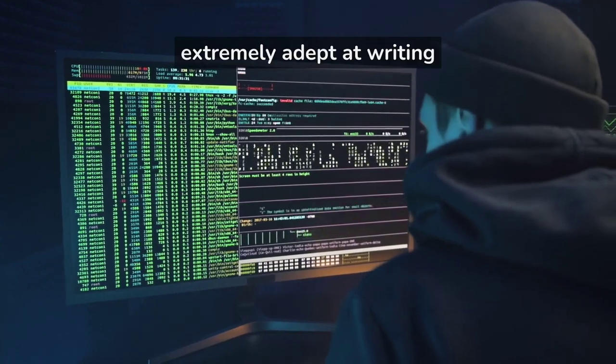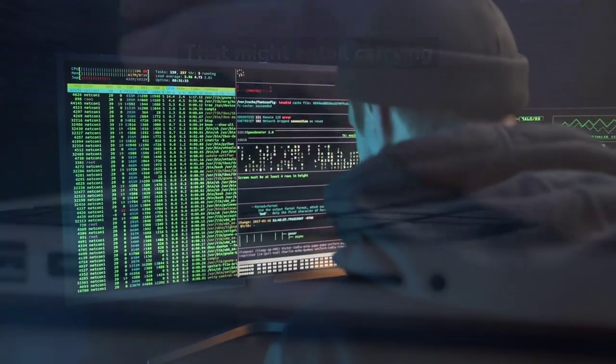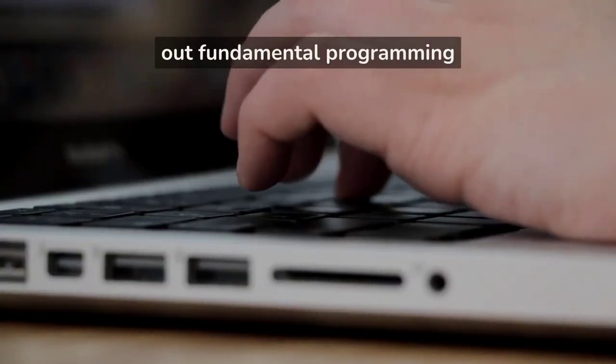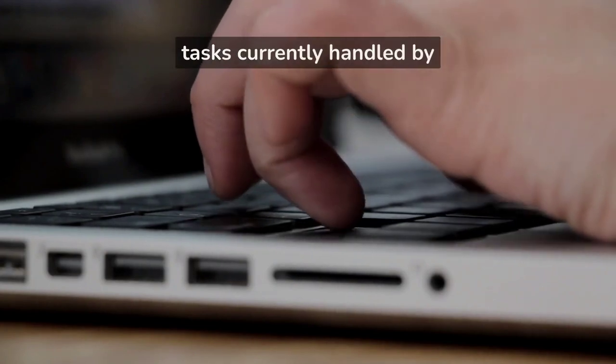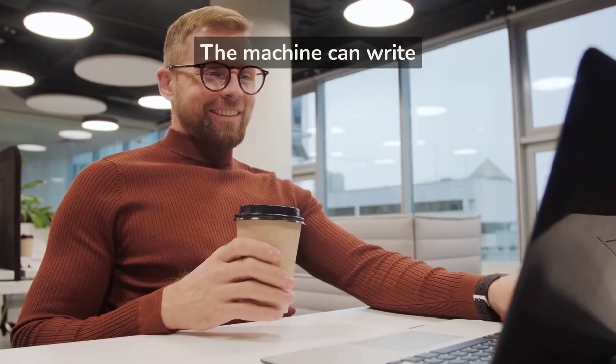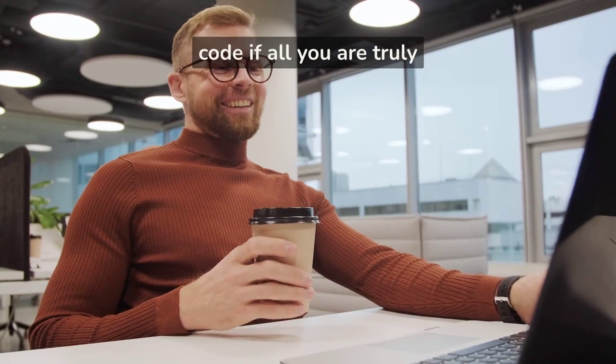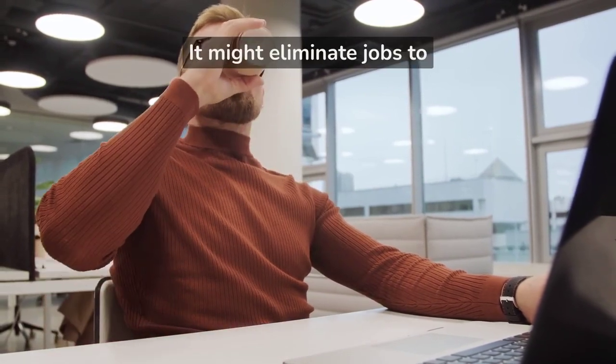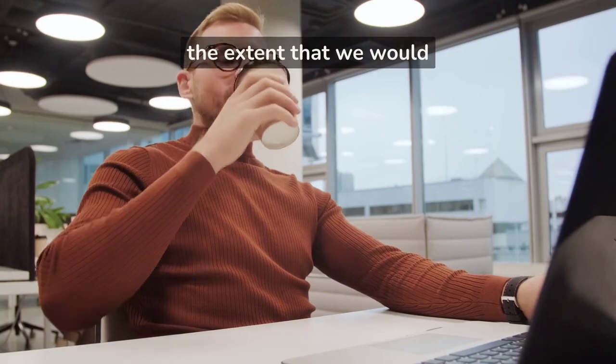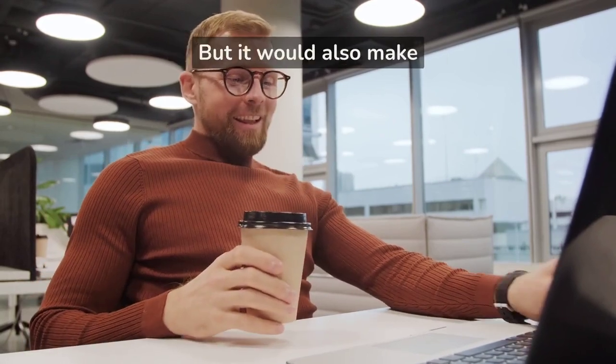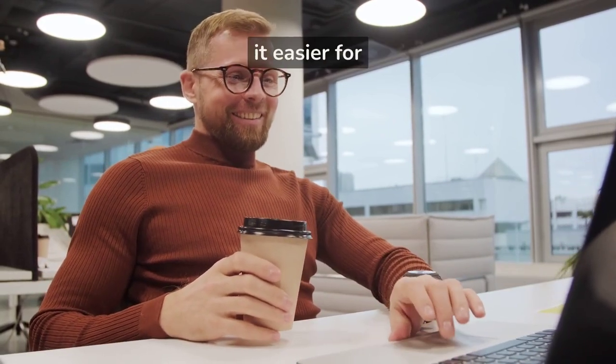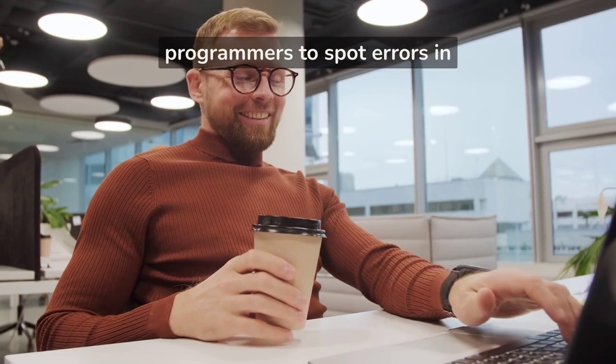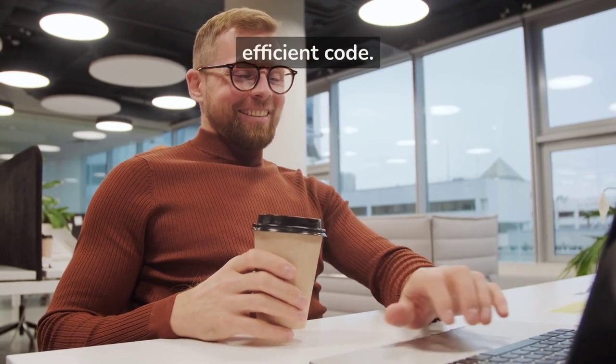Programming and coding are two examples of that. It's actually extremely adept at writing code. That might entail carrying out fundamental programming tasks currently handled by people. The machine can write code if all you are truly doing is translating an idea into code. It might eliminate jobs to the extent that we would require fewer programmers. But it would also make it easier for programmers to spot errors in scripts and create more efficient code.